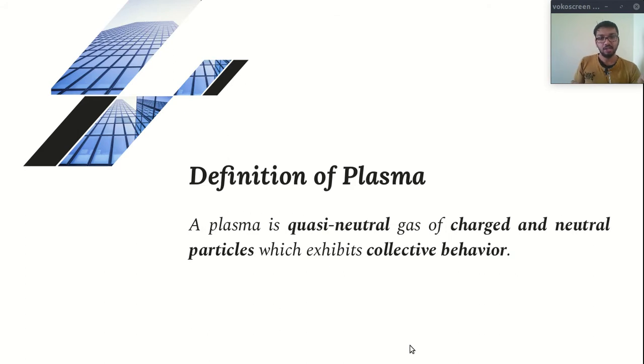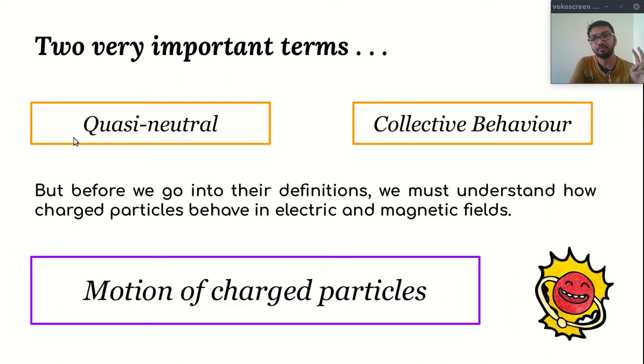In literature, the general definition of plasma is this. A plasma is quasi-neutral gas of charged and neutral particles which exhibits collective behavior. In this definition, two terms are very important - quasi-neutral and collective behavior. These two terms play central role in this definition of plasma. But before we go into their definition, we first want to understand the motion of charged particle in various fields.